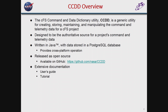The CFS command and data dictionary utility, or CCDD, is a generic program. It's used for creating and maintaining, manipulating, and utilizing the command and telemetry data for our CFS project. The tool was designed to be an authoritative source for the command and telemetry data — the one source from which all other products would be based, to reduce the possibility of errors from multiple sources. The program is written in Java, uses a Postgres database, so it's very cross-platform. It has been released as open source software on GitHub, and has an extensive amount of documentation — about 260 pages of user's guide and a 50-page tutorial.